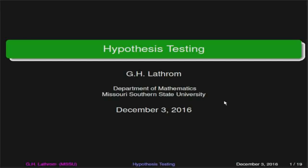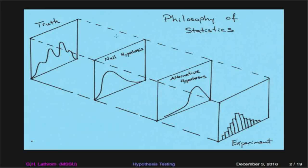Before we actually get to the mathematics involved, it's not a bad idea to discuss some of the philosophy behind the statistics. In the background there is truth, following some probability distribution that we may or may not know exactly. A lot of people may tend to think that statistics is kind of a random chaotic thing and there's really no such thing as truth, but ironically that is not true. There is truth, and that is really the basis of why we are doing the experiment — we are trying to get to the truth that is in the background.